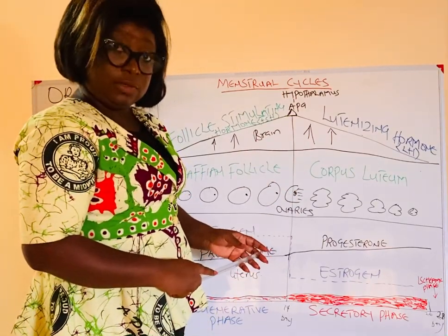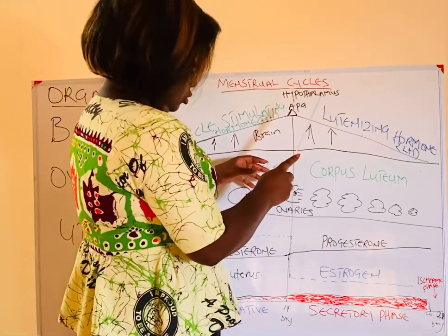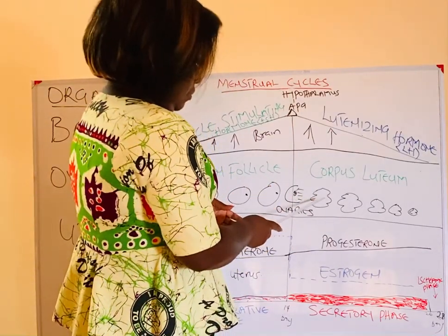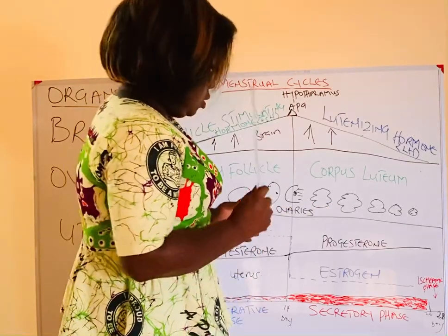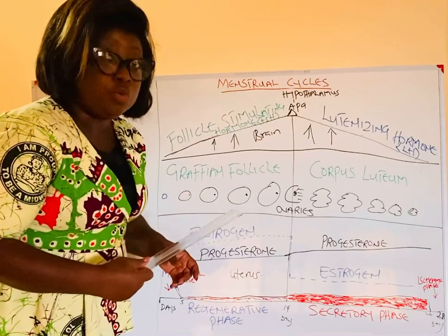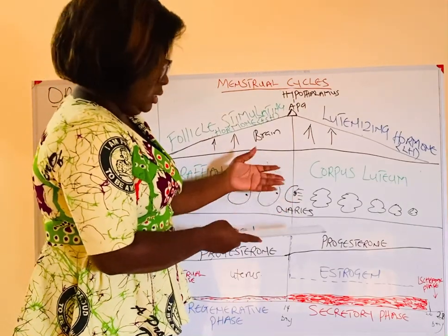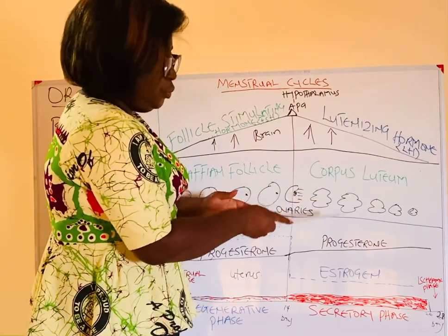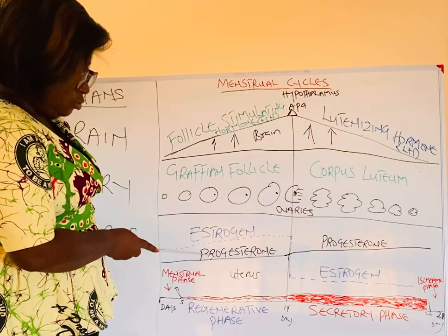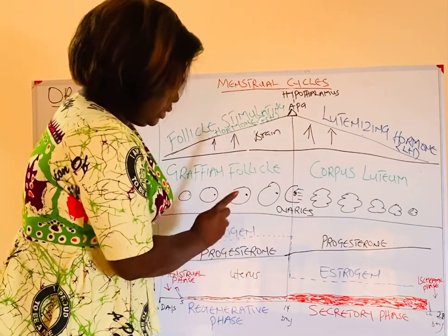After ovulation, the egg is out searching for a sperm to fertilize it. The shell of the ruptured Graafian follicle becomes known as the corpus luteum. The corpus luteum takes over hormone production. The luteinizing hormone, which helped trigger ovulation, now influences the corpus luteum to produce progesterone and estrogen — but now progesterone is produced more than estrogen, which is the reverse of the first half.